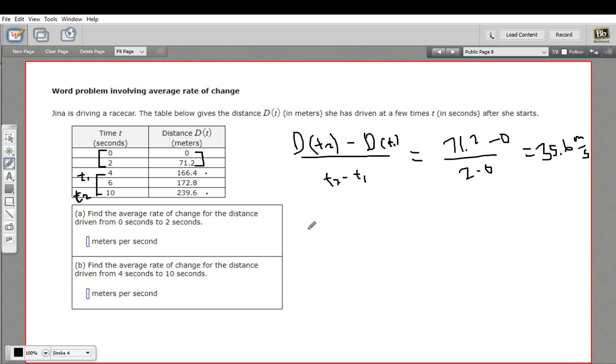And then we have D(t₁) and D(t₂). So let's set it up again. D(t₂) is 239.6 minus 166.4, and then we've got 10 minus four. So on the bottom, this is six. I'm just going to grab my calculator: 239.6 minus 166.4 gives us 73.2. Divide that by six, and we get 12.2 meters per second.